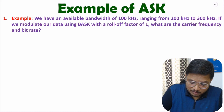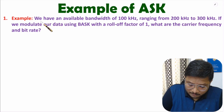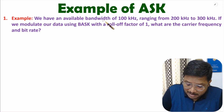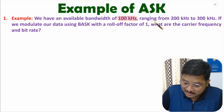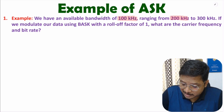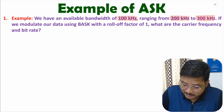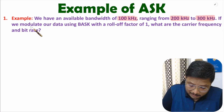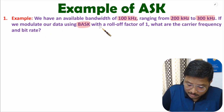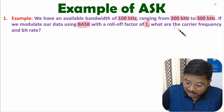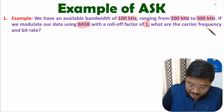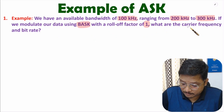In the question we have been given an available bandwidth of 100 kilohertz, ranging from 200 kilohertz to 300 kilohertz. If we modulate our data using binary ASK with a roll-off factor of one, what are the carrier frequency and bit rate? That is the question.